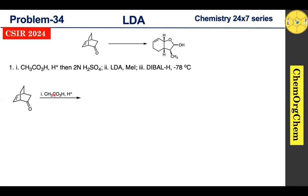Baeyer-Villiger oxidation converts ketones to esters and cyclic ketones to cyclic lactones. Our substrate is a cyclic ketone, so it will produce the corresponding cyclic lactone. There are two sites present in the cyclic ketone — oxygen inserts at the most substituted carbon — resulting in the corresponding cyclic lactone product.